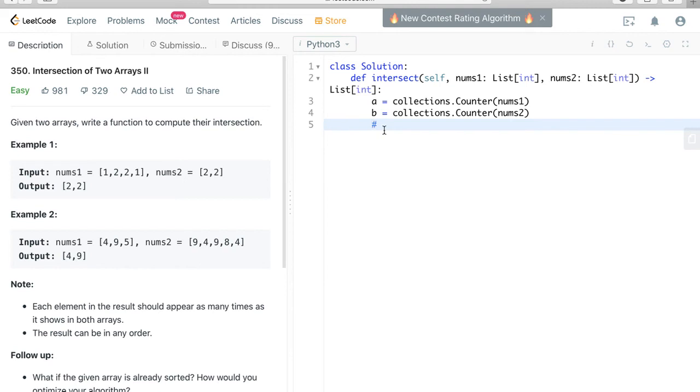if we have the example 1 as an example so a should be 1: 2 and then 2: 2. That's because the number 1 appears twice and then number 2 also appears twice.